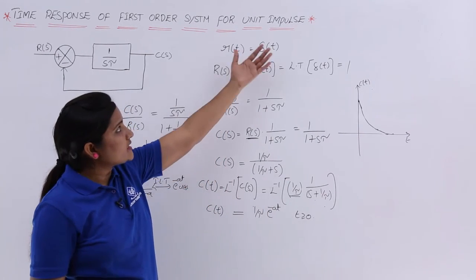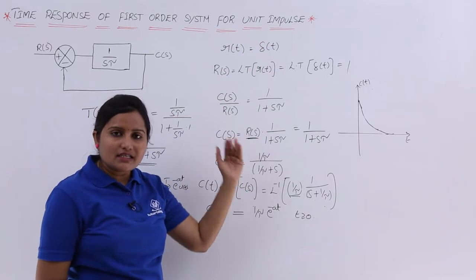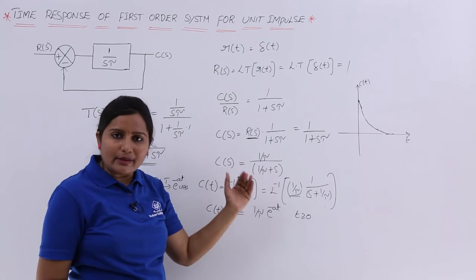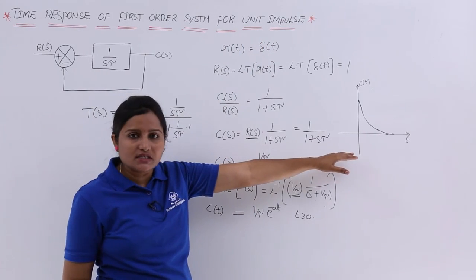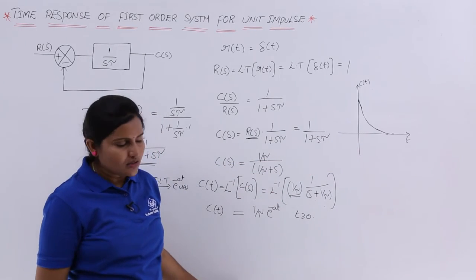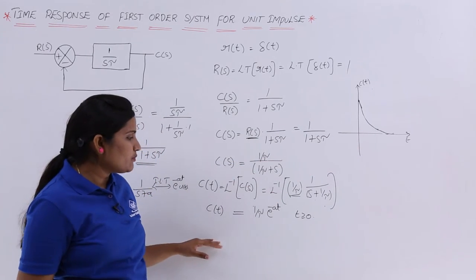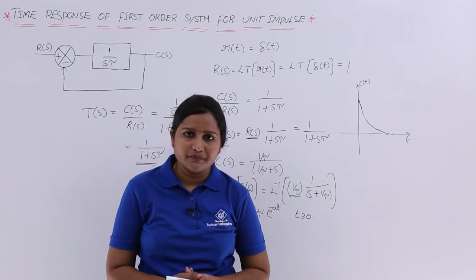So when you test the first order system with a unit impulse, the time response will be a decaying exponential as shown. This is the impulse response of the first order system.